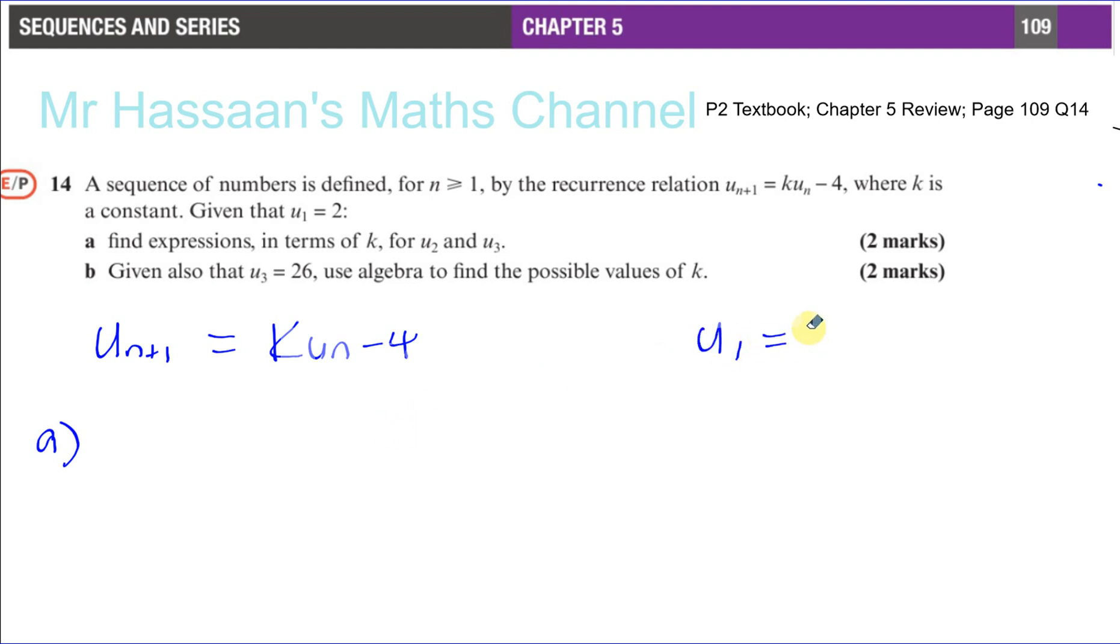So we know that u 1 equals 2. Basically what this means is that to get to the next term, you need to multiply the term before it by k and then subtract 4. That's all it means.